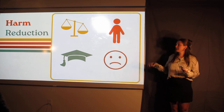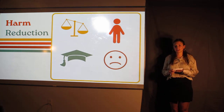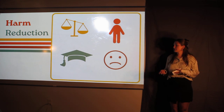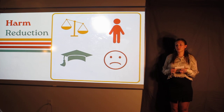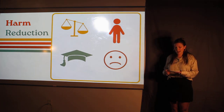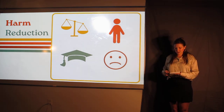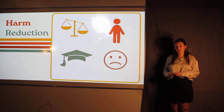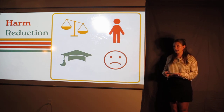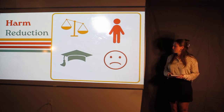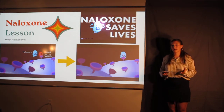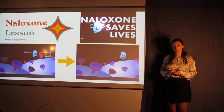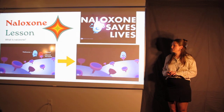The reason I showed that video just now for the harm reduction definition is because the research throughout my thesis showed that video clips were one of the most effective ways to make students retain information. A study from Iran found that students were 15% more likely to retain information when it was delivered via video — I'll be referencing that study again later. The next piece of my lesson will be going over what naloxone is. Naloxone, or by its brand names Narcan or Kloxxado, is an opioid antagonist that works to reverse overdoses.